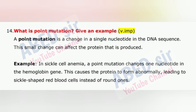Next important question is 14: What is point mutation? Give an example. A point mutation is a change in a single nucleotide in the DNA sequence. This small change can affect the protein that is produced. This causes the protein to form abnormally, leading to sickle-shaped red blood cells instead of round ones — as seen in sickle cell anemia.